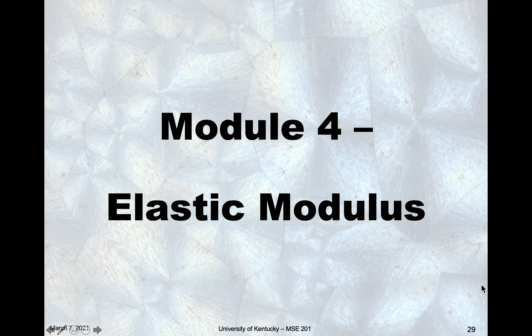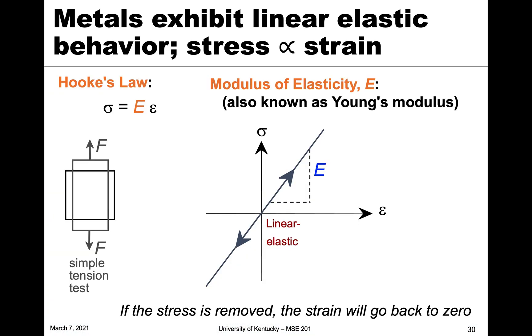In this module we're going to talk about the elastic modulus, one of the elastic properties. This will also tie back to earlier in the semester when we talked about bond force diagrams. Metals and other materials exhibit this linear elastic behavior, where stress is proportional to strain or force is proportional to displacement. This proportionality gets a certain law, known as Hooke's Law.